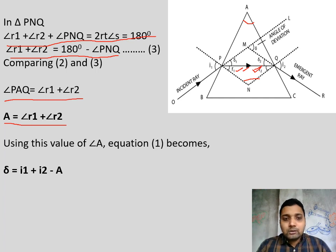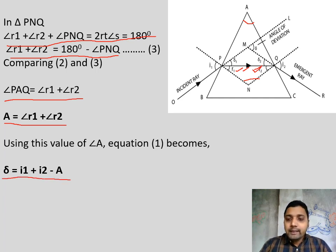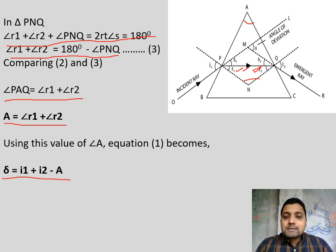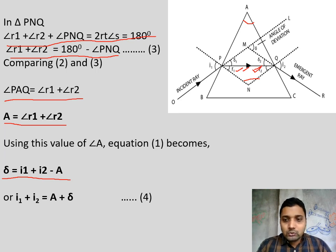Substituting A = r1 + r2 into delta = i1 + i2 − (r1 + r2), we get delta = i1 + i2 − A, or rearranging: i1 + i2 = A + delta. This means: angle of incidence plus angle of emergence equals angle of prism plus angle of deviation.